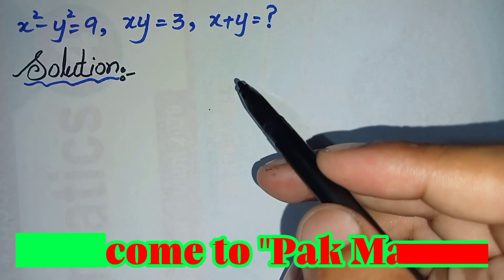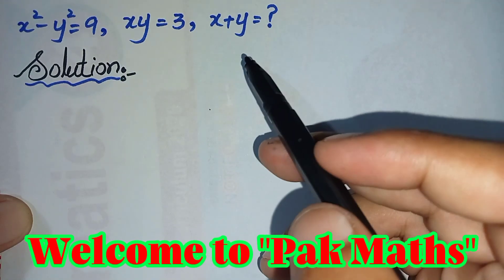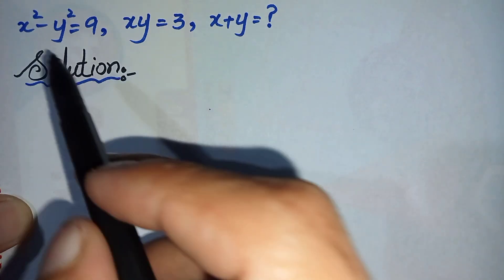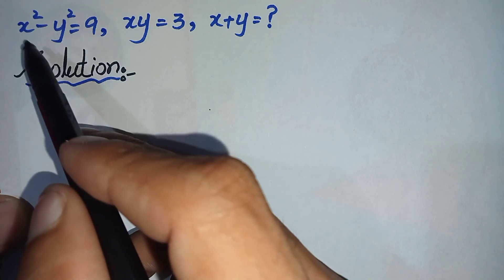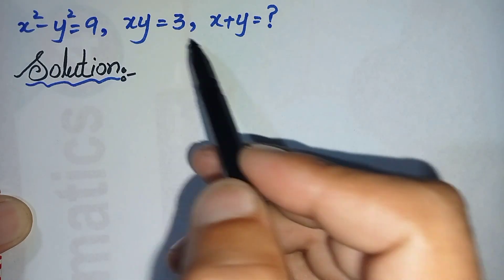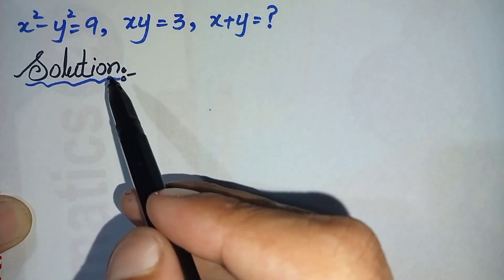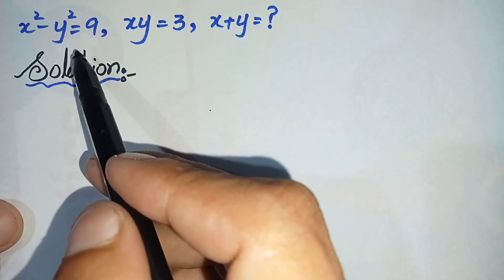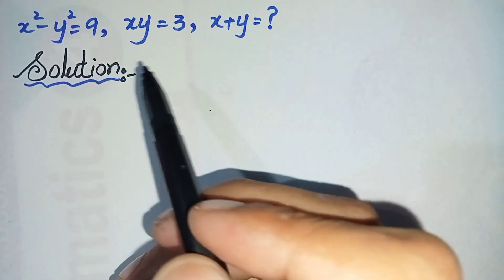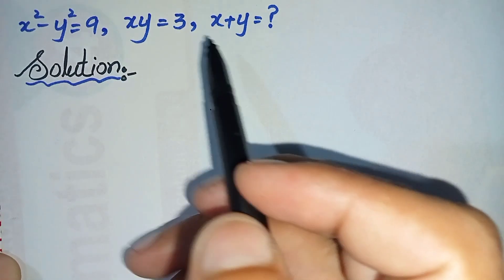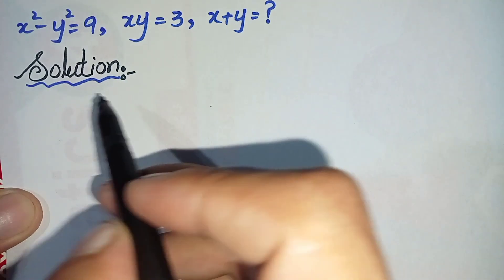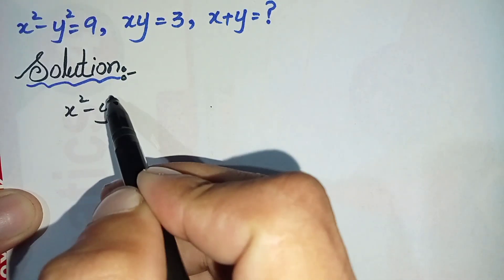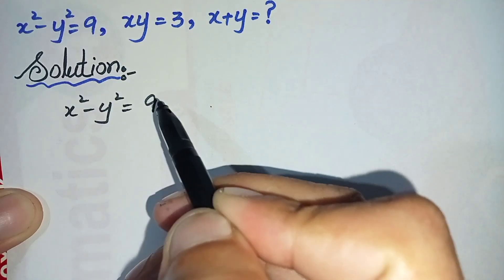Hi everyone, welcome to Parkmas. In this video I am going to find the value of x plus y, where the values of x squared minus y squared and xy are given in this question. Let's start the video. First of all we will write the solution, and we will take this equation to find the value of x plus y. The equation is: x squared minus y squared is equal to 9.